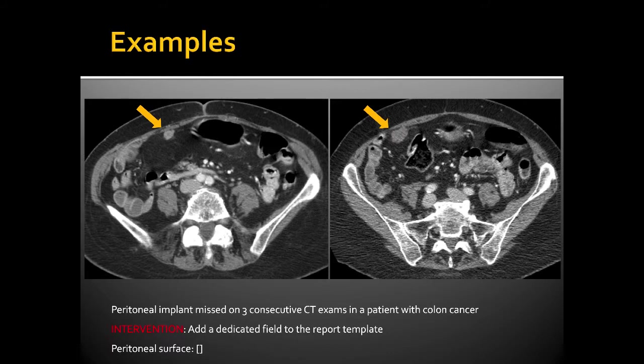In this example, a peritoneal implant was missed on three consecutive CT exams by three different radiologists in a patient with colon cancer. This is a classic blind spot. The intervention: add a dedicated field to the report template that says 'peritoneal surface' with a blank. Every patient with cancer should have an evaluation of the peritoneal surface, as this is one of the most common misses in practices that have imaging for cancer patients.